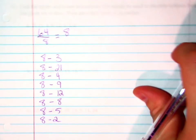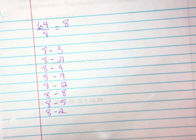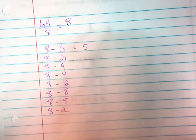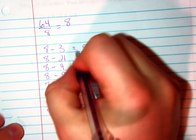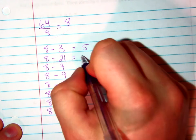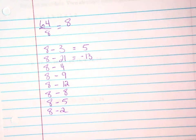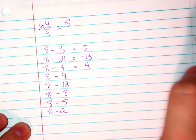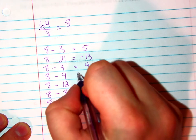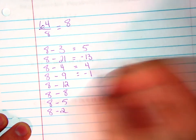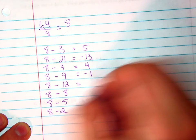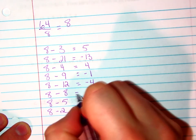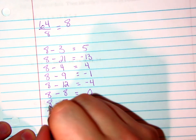So now we won't need the worksheet for a little bit because we're going to do the rest of our work right now on the paper. So 8 minus 3 equals 5, 8 minus 21 equals negative 13, 8 minus 4 equals 4, 8 minus 9 equals negative 1, 8 minus 12 equals negative 4, 8 minus 8 equals 0, 8 minus 5 equals 3, 8 minus 2 equals 6.